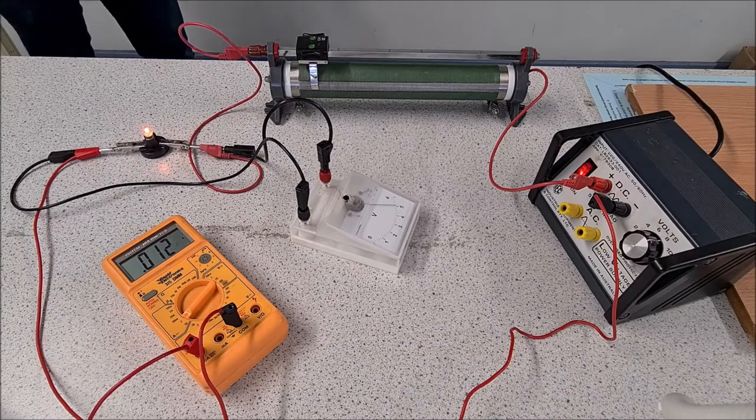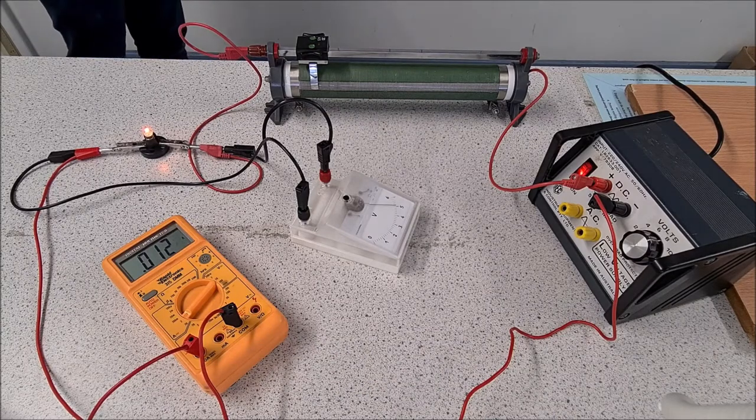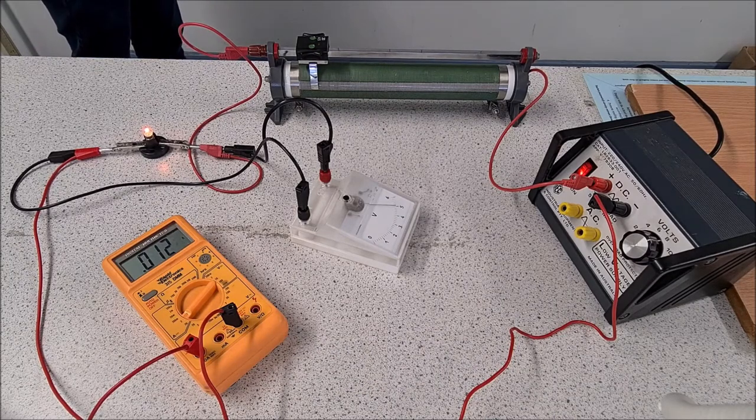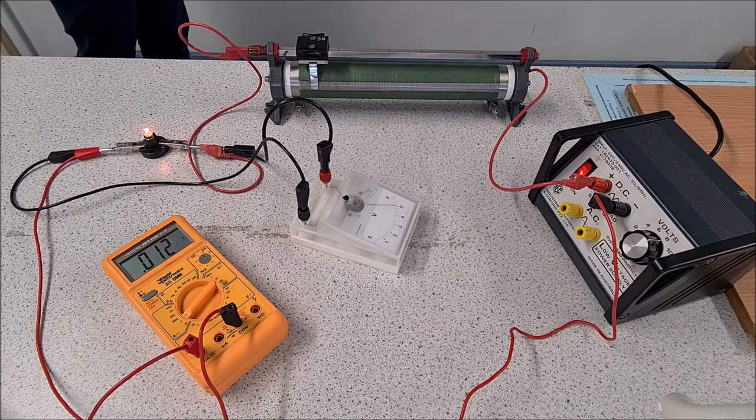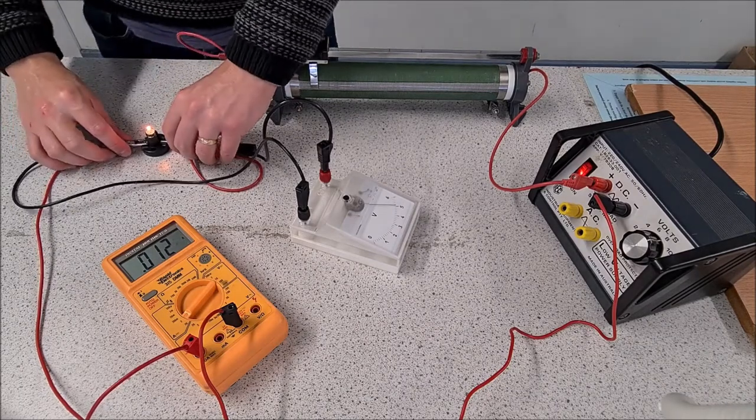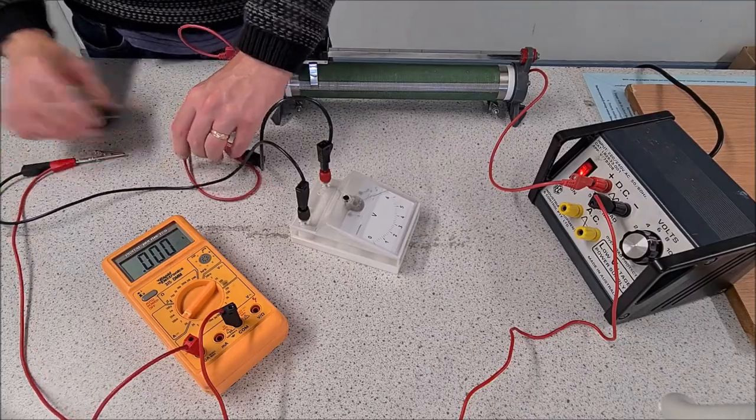So you can see that the current in the filament bulb is way less than it is in the metallic conductor. All right, so we'll do the semiconductor diode next.